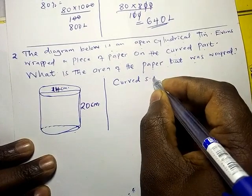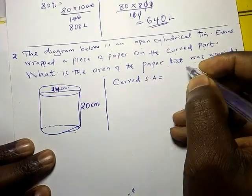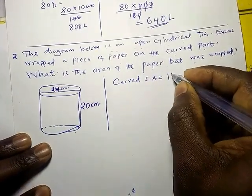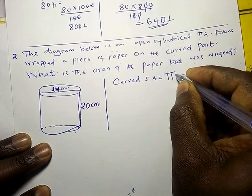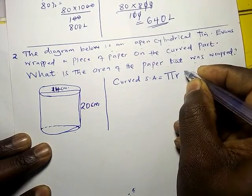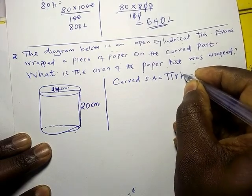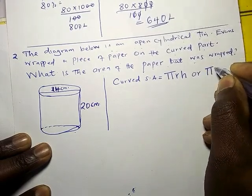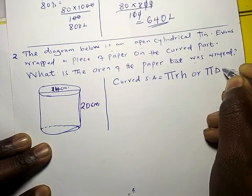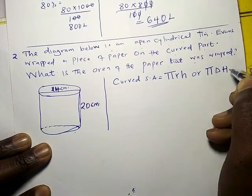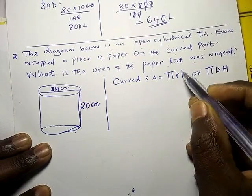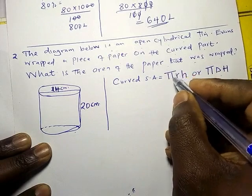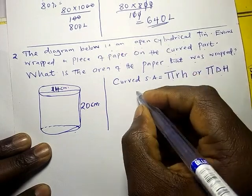The curved surface area of a cylinder is given by the formula 2πrh, or alternatively πdh. You can use either one.